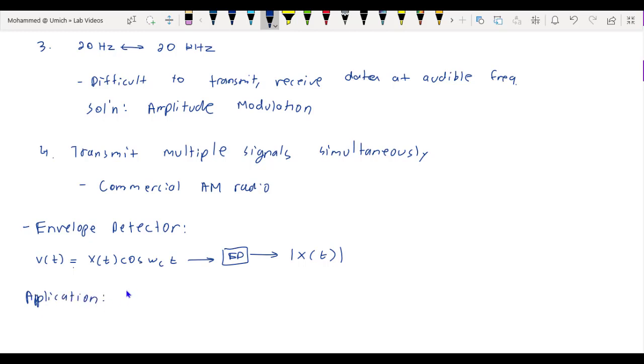So one application of envelope detector besides AM radio is frequency shift keying, abbreviated as FSK. And this will be the focus of your lab 3.